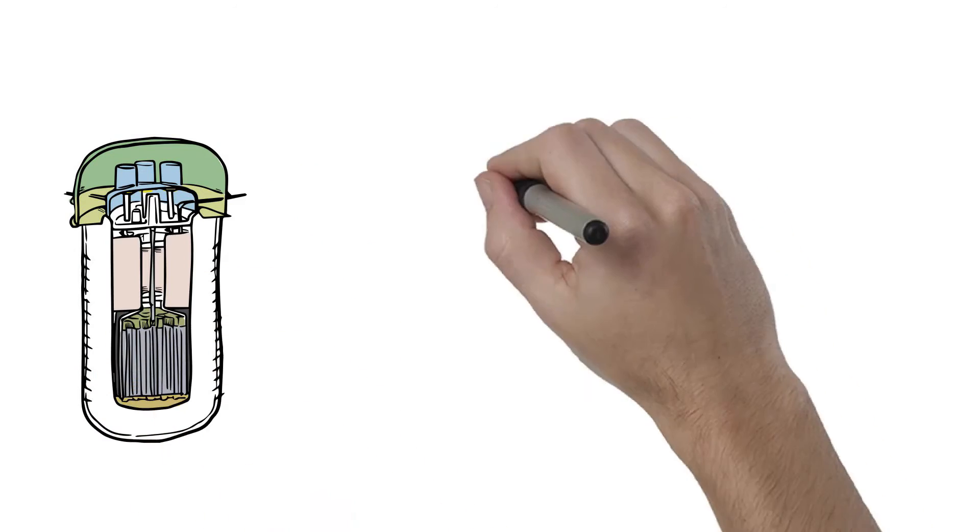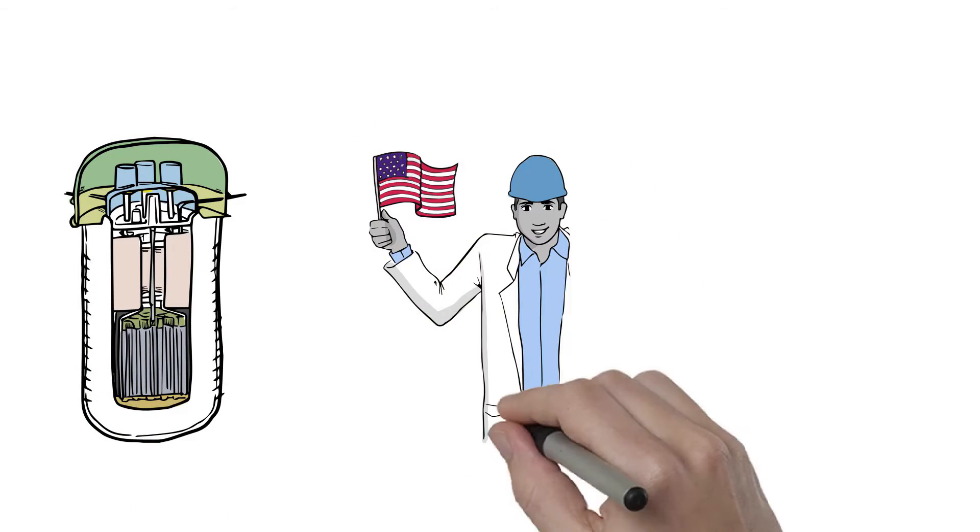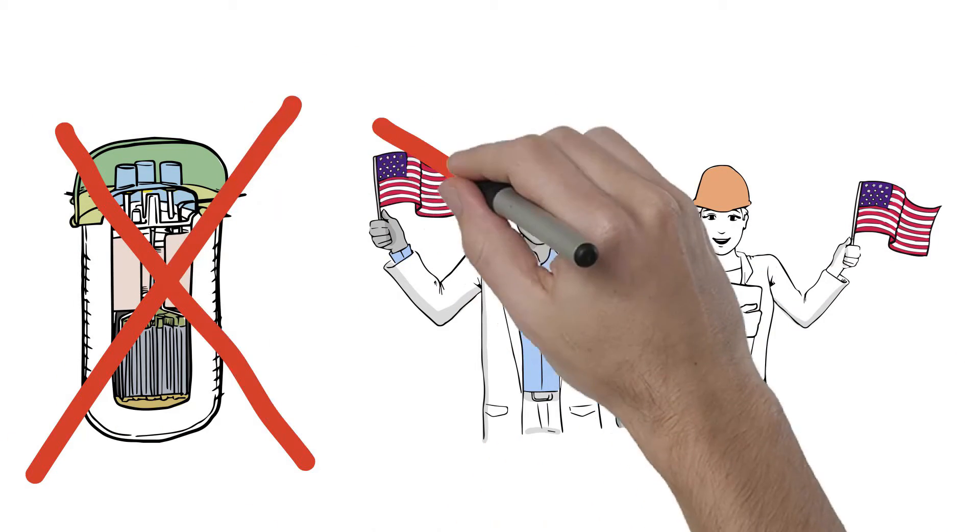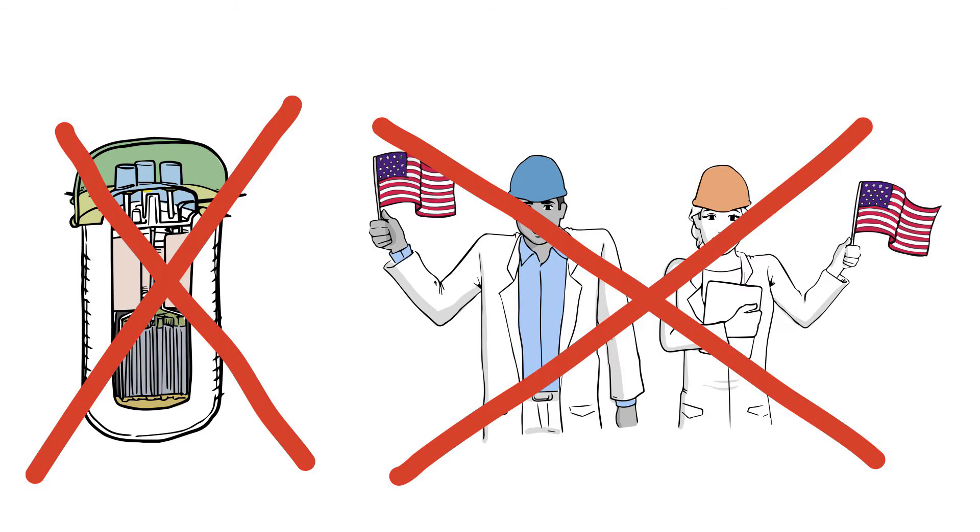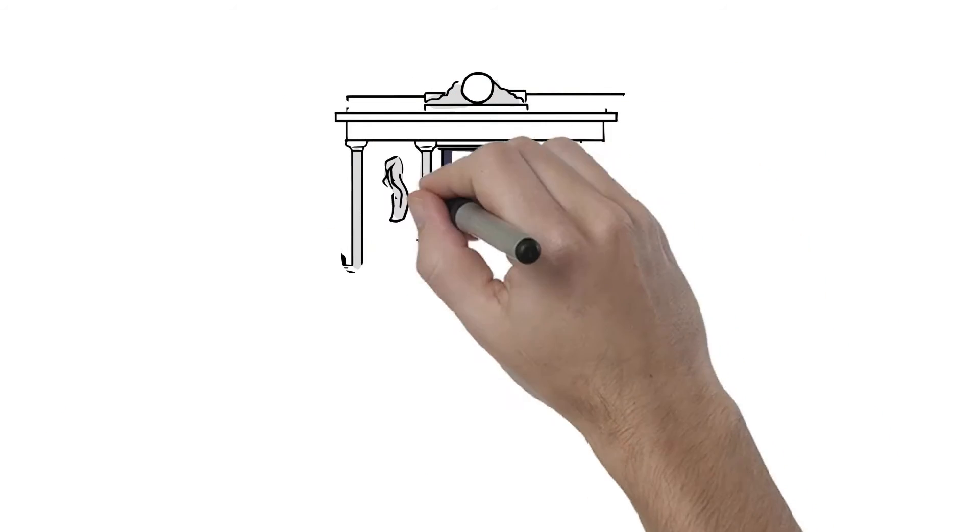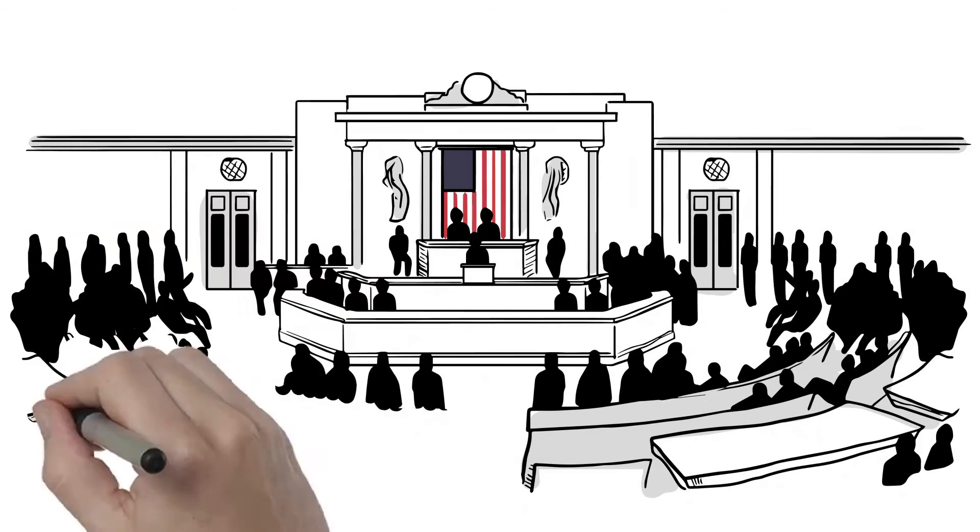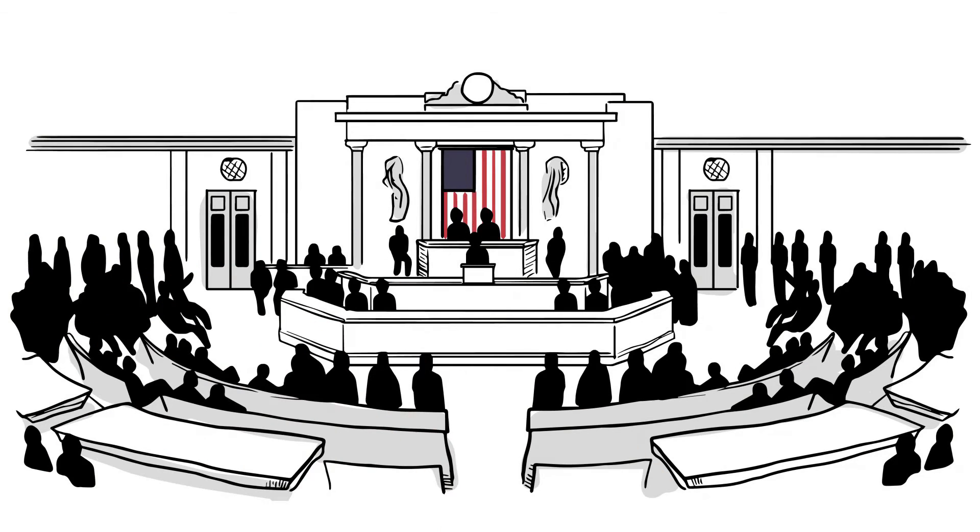However, the United States government discontinued funding the molten salt reactor development program in the 1970s, due to political and economic reasons. The technology became classified information. The United States government has not outlined steps needed to allow the development and commercialization of this already proven technology in America.